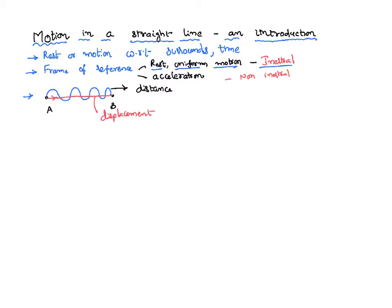The motion of a body is observed in terms of either distance travelled, which is independent of direction and is just the actual path followed by the body. Displacement is the shortest possible distance travelled by a body in a specified time. Distance could be greater than displacement, or distance could also be equal to displacement, but there is no chance that distance will become less than displacement.